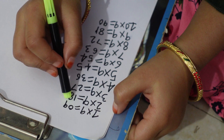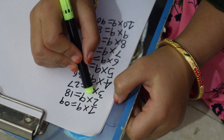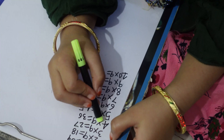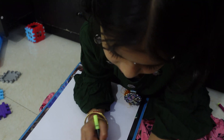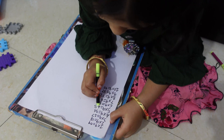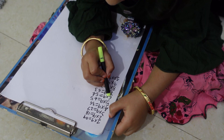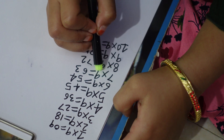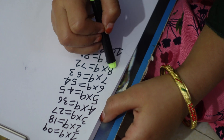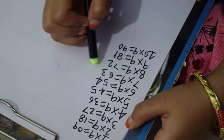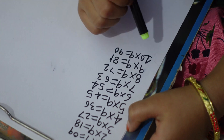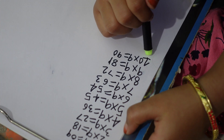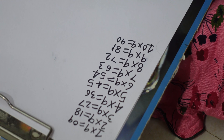1 nine is 9, 2 nines are 18, 3 nines are 27, 4 nines are 36, 5 nines are 45, 6 nines are 54, 7 nines are 63, 8 nines are 72, 9 nines are 81, 10 nines are 90.